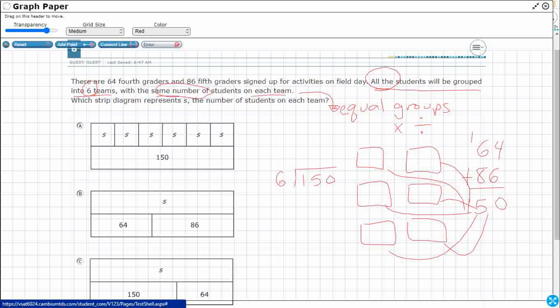We could do this. We could do six groups of what, of my unknown here, equals 150. Let's see if I can get that right. But I don't know my sixes that high, so that's why I'm choosing to divide.